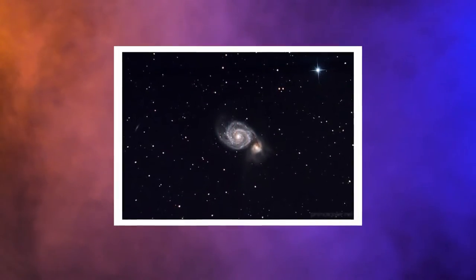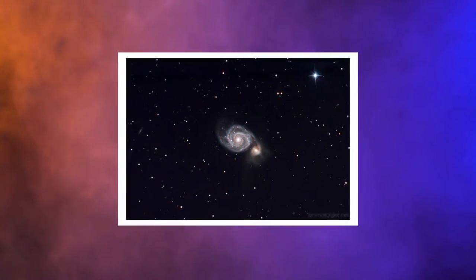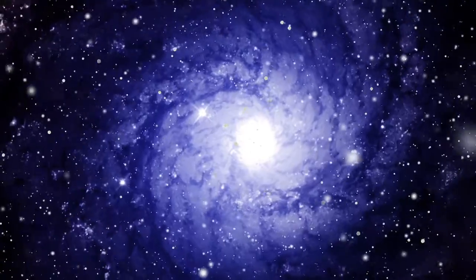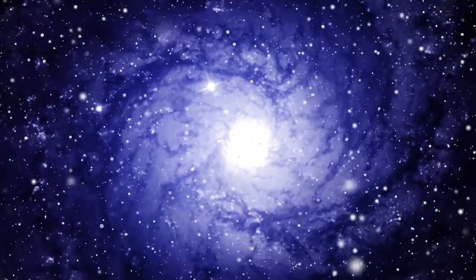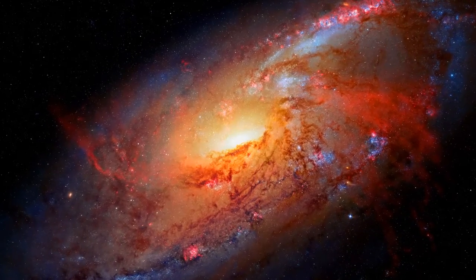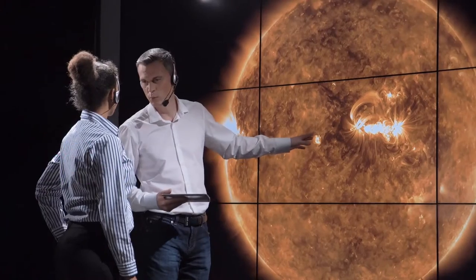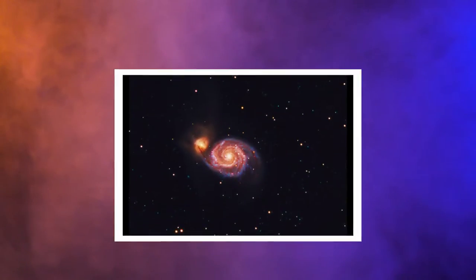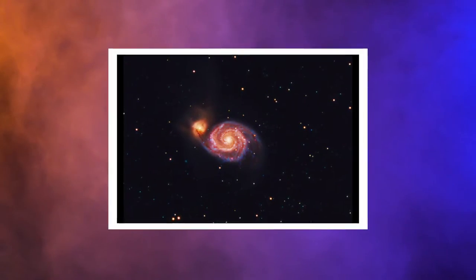This galaxy is also known as Messier 51A or NGC 5194. It has a spiral structure and is one of the most magnificent galaxies in the cosmos. It's located in the constellation Canis Venatici at a distance of around 23 million light-years. Astronomers are interested in it because of the spiral structure and the relationship it has with M51b, a nearby galaxy.